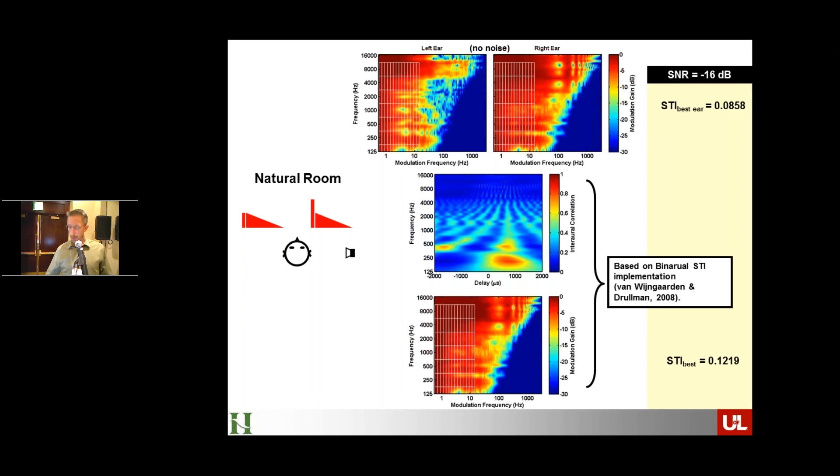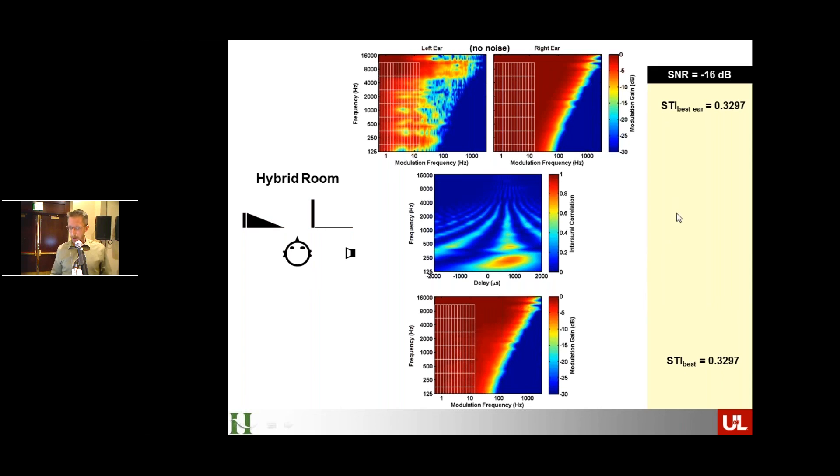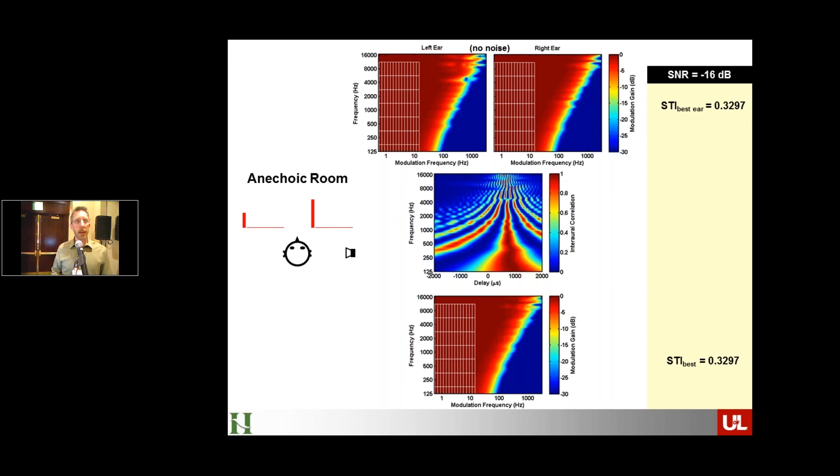So here are some numbers for the natural room case. Here are some numbers now. So I'm going to jump to our hybrid case. So case where we have a clean signal now in the right ear and we can see that the modulation characteristics are cleaned up a lot, which we would predict because there's now no reverb there. And, of course, when we do that, we now have a much better ear signal and STI jumps substantially, in both cases. And then just compare that to now anechoic. We're going to clean up the other side and STI, of course, now jumps, actually does not jump any more than we were before because we haven't done anything now better to the better ear. The better ear was already at ceiling.